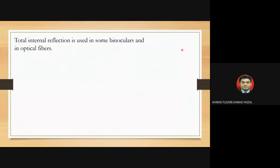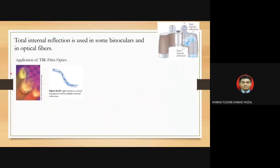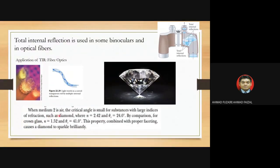Total internal reflection is used in binoculars and optical fibers. Optical fibers are strands of glass used to carry voice, video, and data signals in telecommunication networks — solid glass or transparent plastic rods that pipe light from one place to another through multiple internal reflections. Total internal reflection is also seen in diamonds; with n = 2.42 and a critical angle of 24 degrees, proper faceting causes diamonds to sparkle brilliantly.